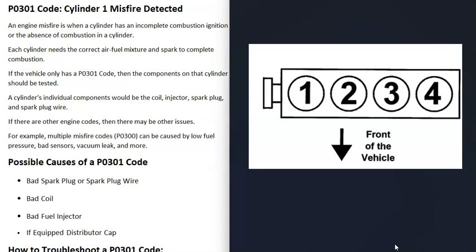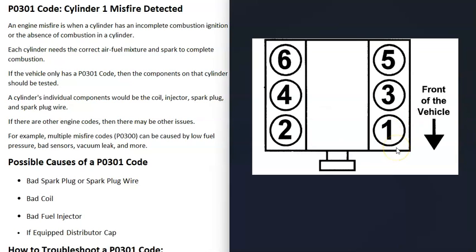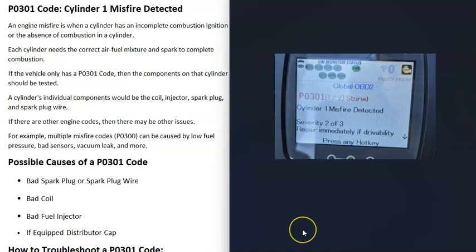If you Google your engine along with firing order or cylinder location, you should be able to find the number one cylinder on your particular engine. The thing about these misfire codes is that if you're only getting the misfire code on one cylinder, then you can just go check the components on that cylinder.